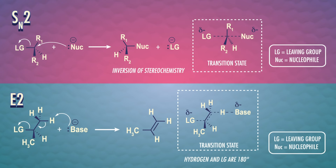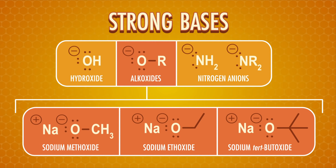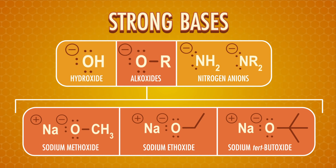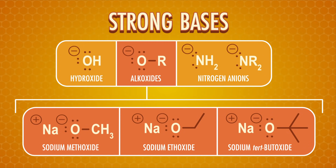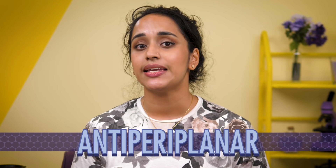On to E2 reactions! Like SN2 reactions, everything happens at once and there's no carbocation to worry about. The nucleophile acts as a base, takes a beta-proton, and the leaving group leaves. This mechanism is bimolecular, which is why there's a 2, and its reaction rate depends on two molecules – the substrate and the base. Because the base is involved in the rate, stronger bases like negatively charged oxygen and nitrogen anions favor E2 reactions. For most E2 reactions, the hydrogen and the leaving group must be anti-periplanar, which means they need to be in the same plane but on opposite sides of the bond between the alpha and beta carbon.